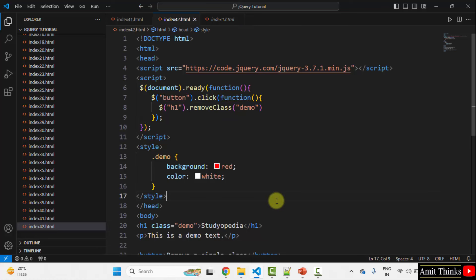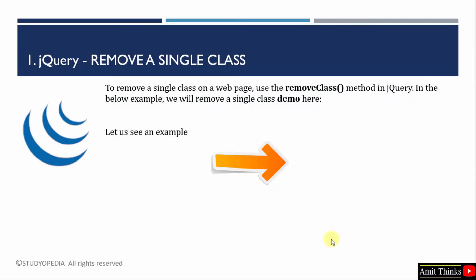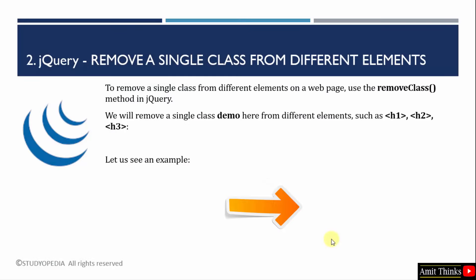Let us see the next example. Now we will see how to remove a single class from different elements. In the previous example, we removed a single class demo from a single element h1. Now we will remove this demo class from multiple elements — h1, h2, and h3, all three heading levels.